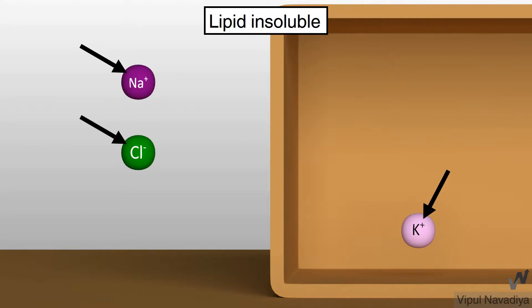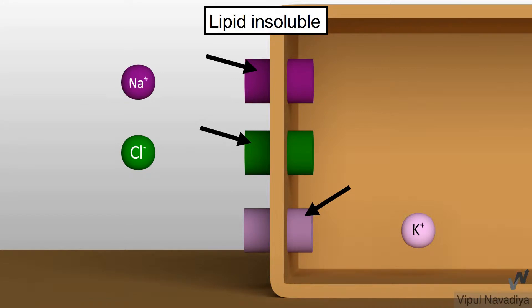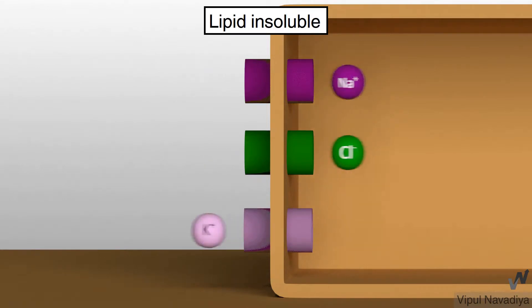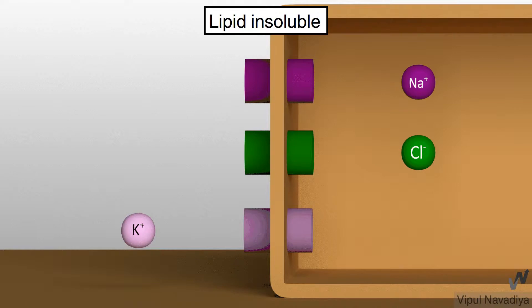For example, gases like oxygen, carbon dioxide and steroid hormones are soluble in lipid. So, they can pass through this membrane. Lipid insoluble substances like sodium, chloride, potassium, water etc. cannot pass through this lipid bilayer. So, to allow their passage, there are various transport proteins on cell membrane. They make a hole in cell membrane through which lipid insoluble substances can move. Most of the proteins are highly selective for specific ions or molecules. For example, sodium channel allows passage of sodium only. Chloride channel allows passage of chloride only. And likewise. This was about permeability.